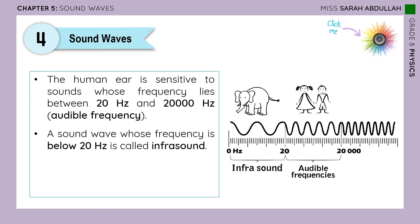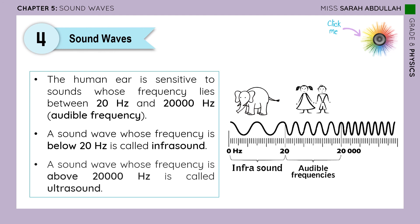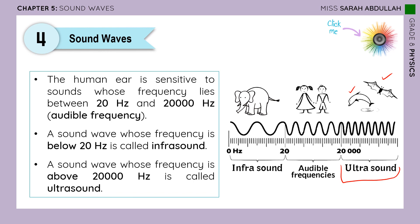What about sounds with a frequency greater than 20,000 hertz? A sound wave whose frequency is above 20,000 hertz is called ultrasound — ultra means beyond. Many animals communicate in the ultrasound spectrum, such as dolphins and bats. It's fascinating that some sounds around us we cannot hear, but yet they are there. We can only hear sounds of frequency between 20 and 20,000 hertz; beyond that range, we cannot hear, but many animals can.